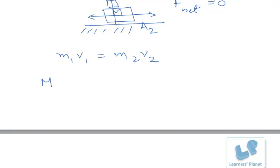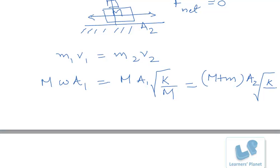So M V1 is M and V1 is given by omega A1, which can be written as M A1 times the square root of K by M. Similarly in the second case, the new mass is equal to M plus small m, the new amplitude is A2, and the new omega will be K by M plus m.